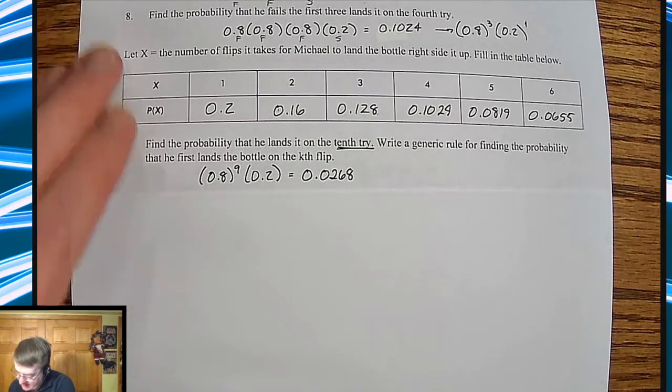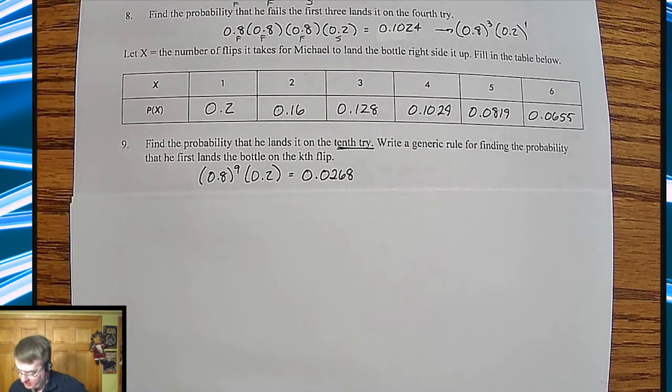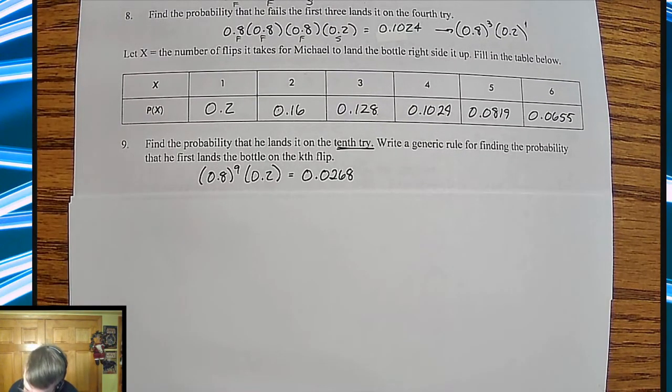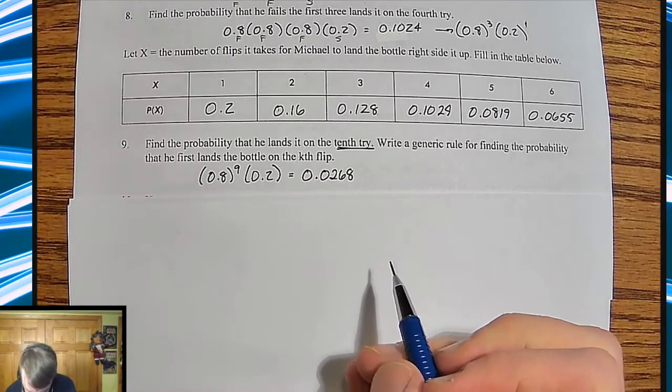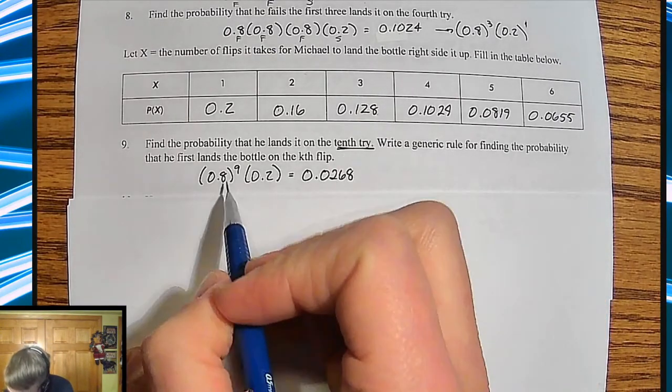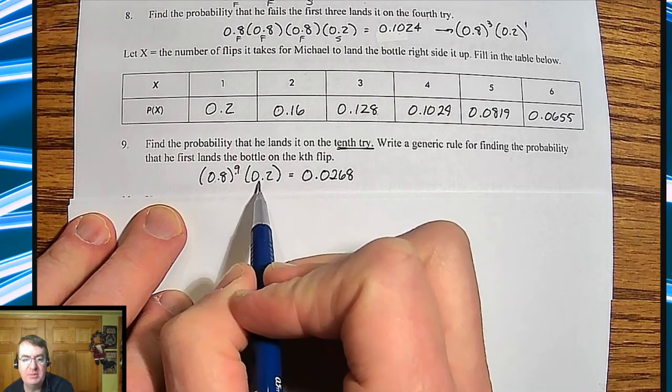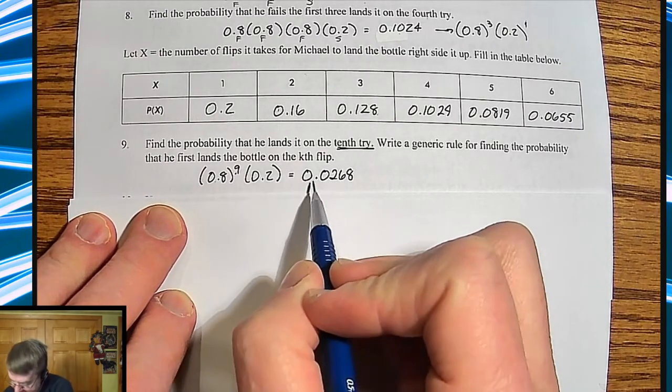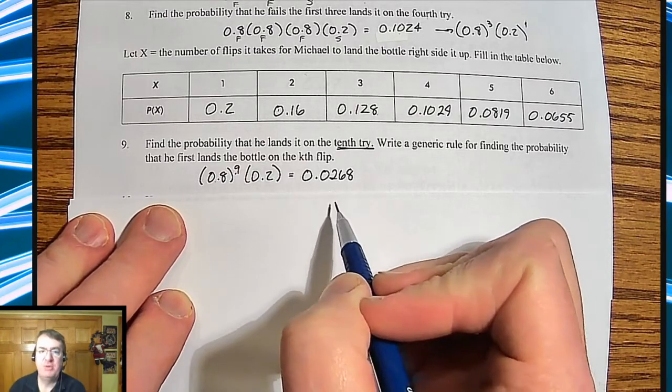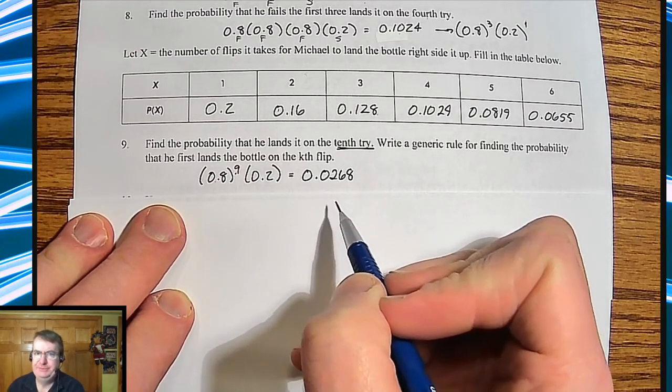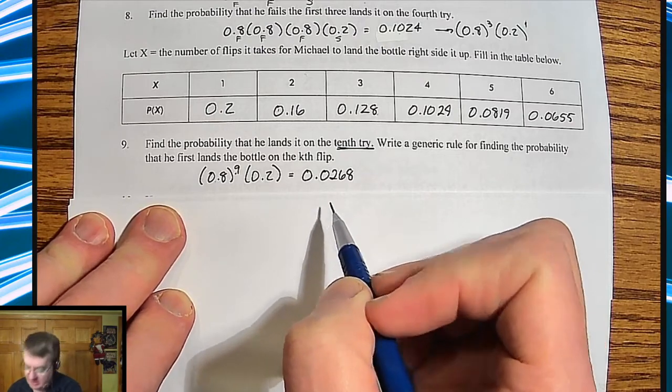What's the probability that he lands on the 10th try? A generic rule for finding the probability that he first lands at the bottom of the K flip. So first of all, 0.8 to the ninth power, because he had nine failures, times 0.2. So it would still take almost 3% of the time. Not super likely, but it's still, you know, 3%. There's still a chance that it would take that long.